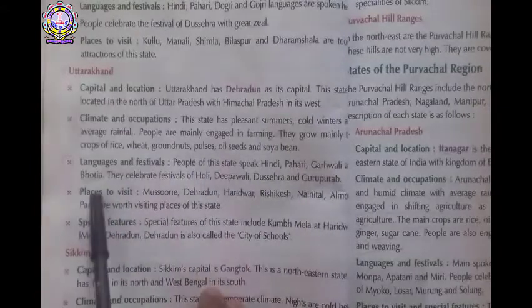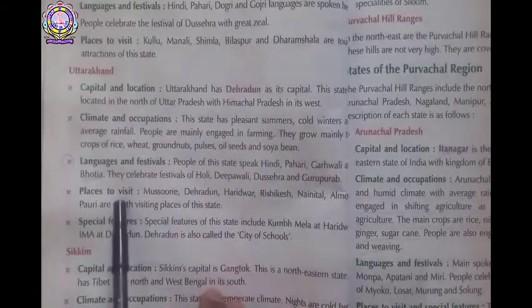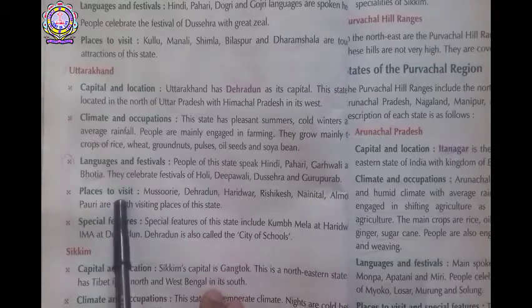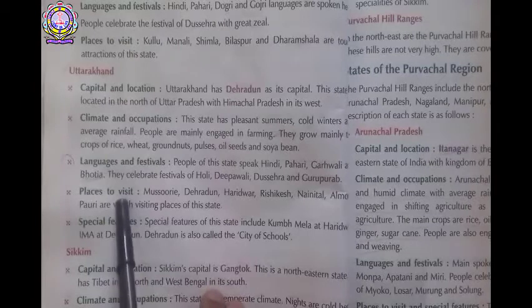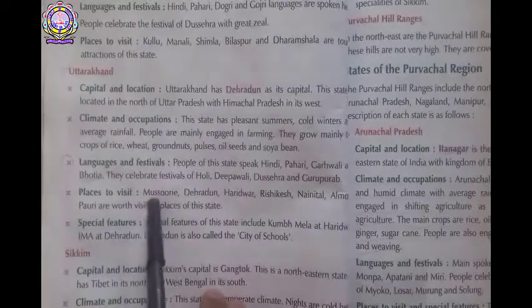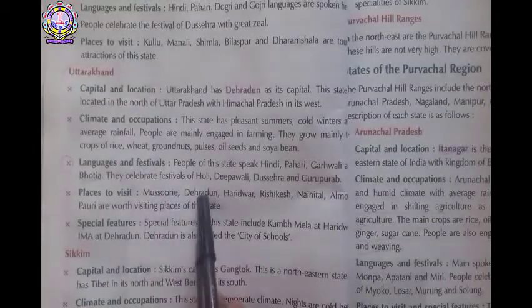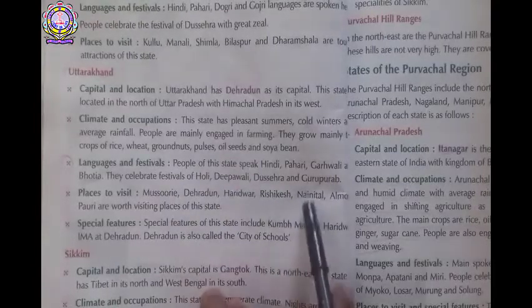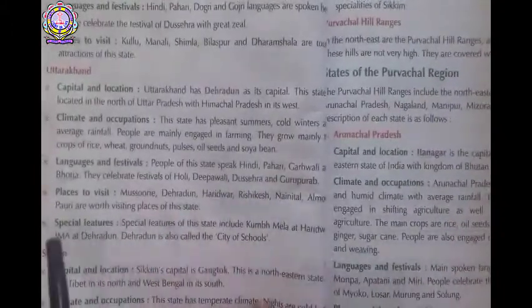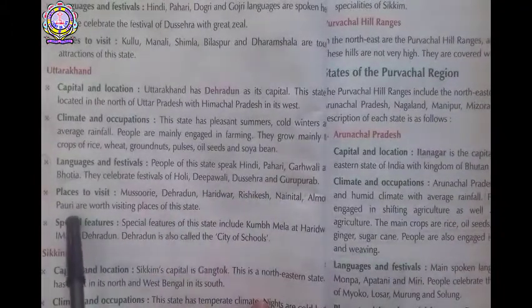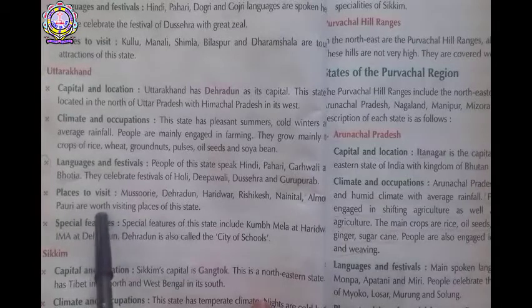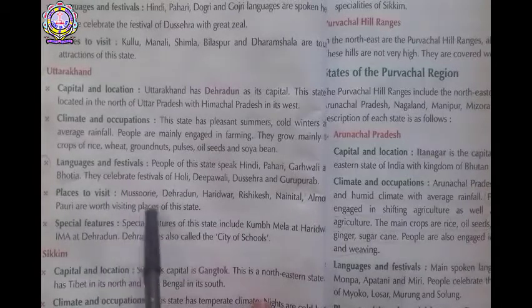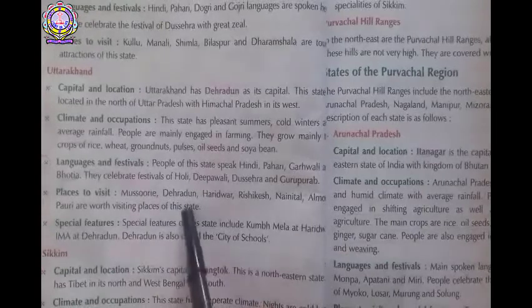Then comes places to visit. Places worthwhile to visit in Uttarakhand are Mussoorie, Dehradun, Haridwar, Rishikesh, Nainital, Almora, and Pahiri. These are the worth-visiting places of this state.